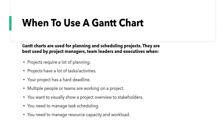So when would you want to use one? Gantt charts are used for planning and scheduling projects. They are best used by project managers but also sometimes by team leaders and executives. They are often used when projects require a lot of planning, when projects have a lot of tasks and activities, when a project has a hard deadline, when multiple people or teams are working on a project, when an individual wants to visually show a project overview to stakeholders, when task scheduling needs to be managed, and when resource capacity and workload also needs to be managed.